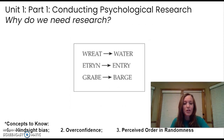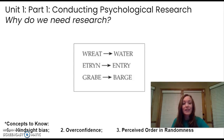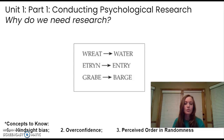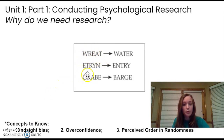The next pitfall is overconfidence. As humans, we tend to think we are more correct than we actually are — we're more confident than we are accurate. A great example comes from a 1978 study using anagrams. Researcher Richard Goranson gave participants a set of scrambled words and their solved versions, which you can see on the screen.